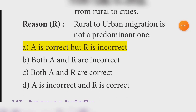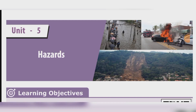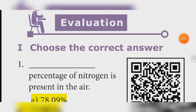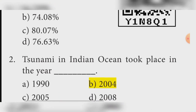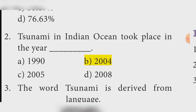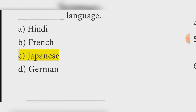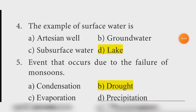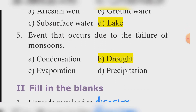Unit 5, Hazards. Choose the correct answer. First: The percentage of nitrogen present in the air is 78.09%. Second: The tsunami in the Indian Ocean took place in the year 2004, Answer: Option B. Third: The word tsunami is derived from Japanese language, Answer: Option C. Fourth: The example of surface water is a lake, Answer: Option D. Fifth: The event that occurs due to the failure of monsoons is Drought, Answer: Option B.